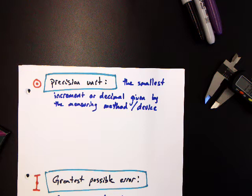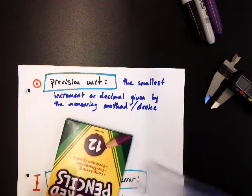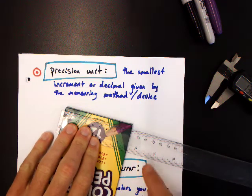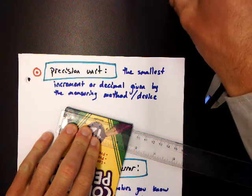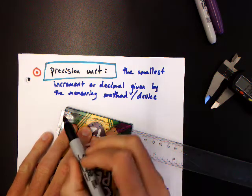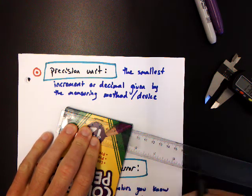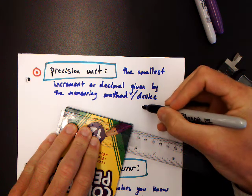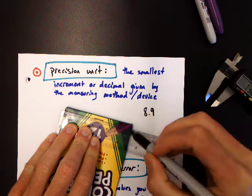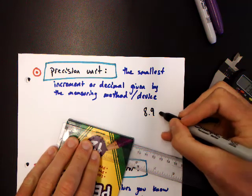As an example, if I'm going to measure the width of this colored pencil box with my ruler, I've got centimeters and I have millimeters marked. And so I get roughly 8.9. It's not quite all the way to that 9 mark. Centimeters.